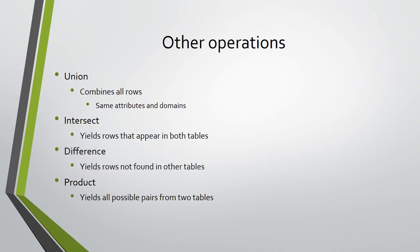The intersect operation yields as result the tuples that appear in both relations — that is, the tuples common to the intersecting relations. As in the previous case, the relations have to be compatible. The difference operation yields as result the tuples from the first relation that are not found in the second relation; again, the relations must be compatible. The product operation yields as result all possible pairs from two relations, with the result having all attributes of both relations, where same-named attributes in the two relations are not combined but form different attributes in the result.